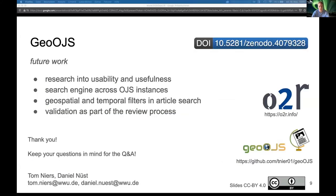Future work includes research into usability and usefulness of geospatial metadata for discovery of articles, a search engine across OGS instances, geospatial and temporal filters in article search, and validation of geospatial metadata as part of the review process. We plan to release Geo OGS in the OGS plugin gallery so that the increasing number of independent and open access journals may benefit from it. At the moment, Geo OGS is available on GitHub or as a release on Zenodo. Thanks for your attention and keep your questions in mind for the Q&A.